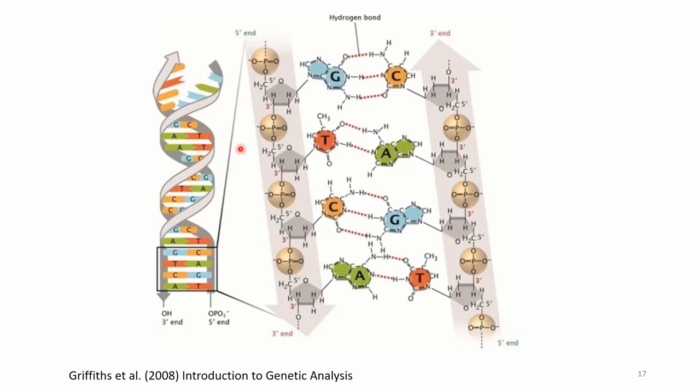This is done such that in one strand it goes from the five-prime side: five, three, five, three, five, three, and so on. The other side is exactly the opposite: three, five, three, five, three, five. So these two strands are anti-parallel to each other — one goes in one direction, the other goes the opposite direction.